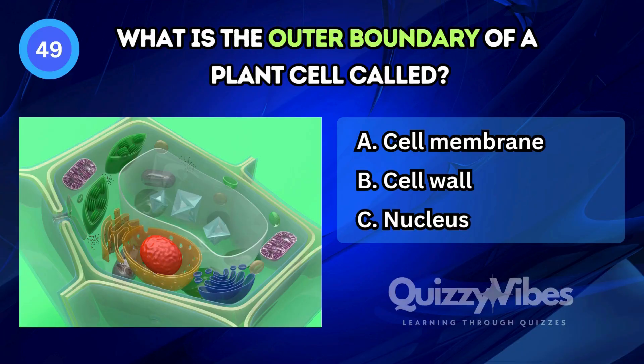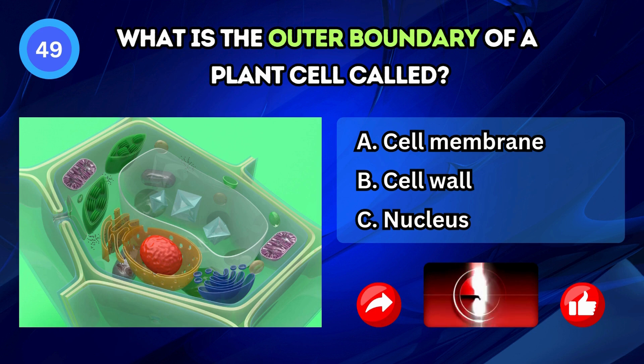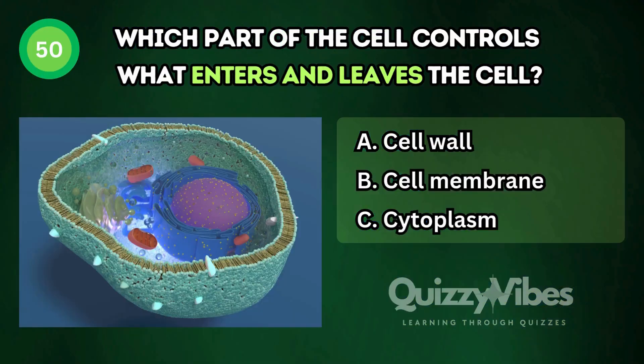What is the outer boundary of a plant cell called? Answer B, cell wall. Which part of the cell controls what enters and leaves the cell?